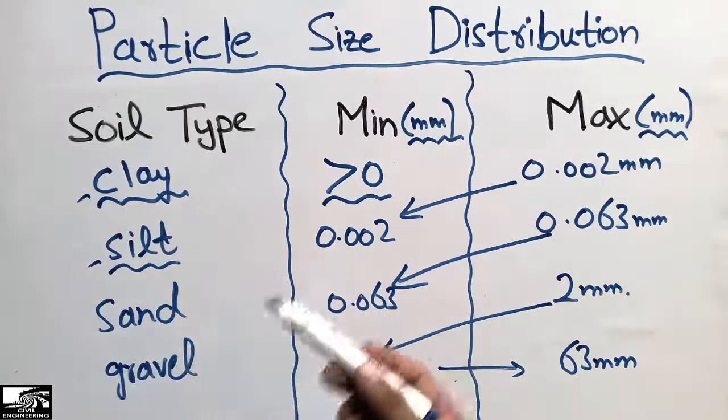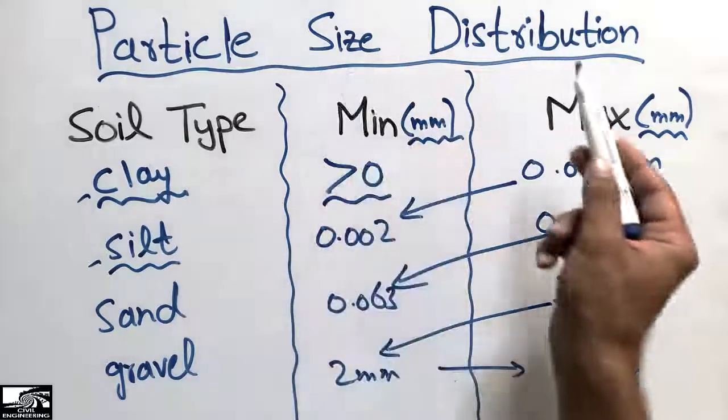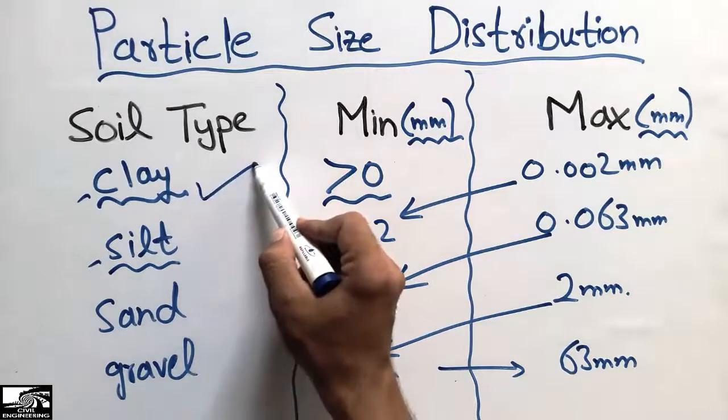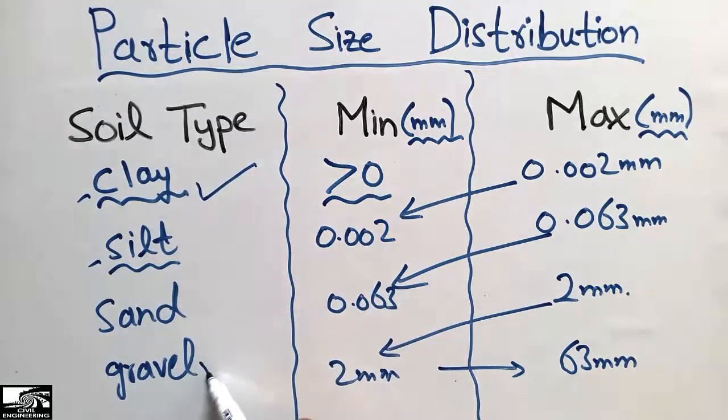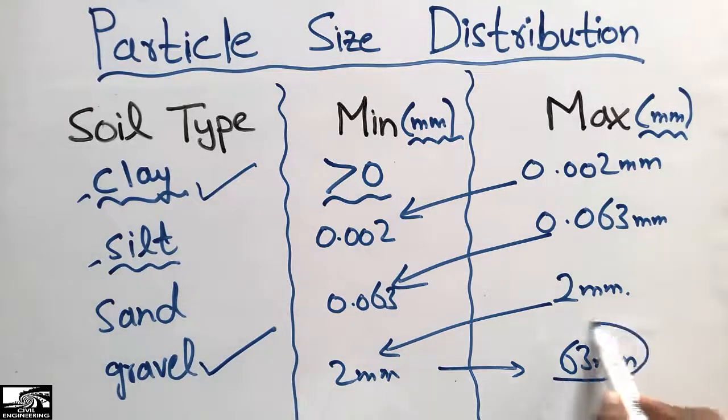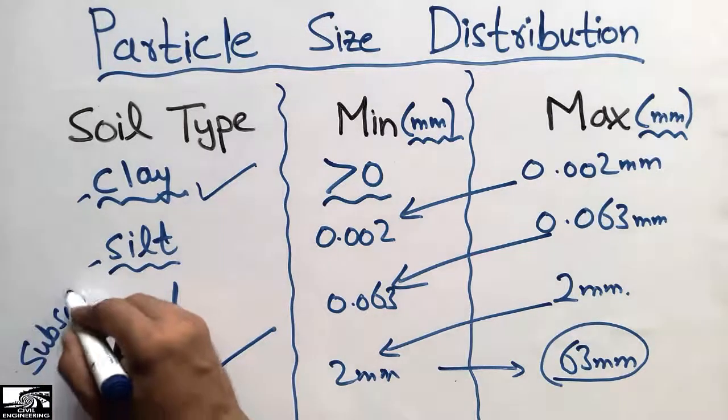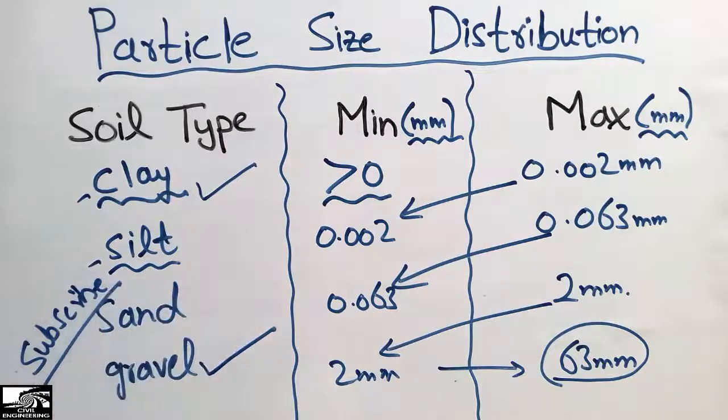These were the soil types categorization on the basis of particle size distribution. These were the minimum and maximum ranges of these soil types, where clay is the lowest particle size and gravel is the largest particle size at 63 millimeters. This was today's topic. Don't forget to subscribe our channel for more civil engineering videos. Thank you for watching.